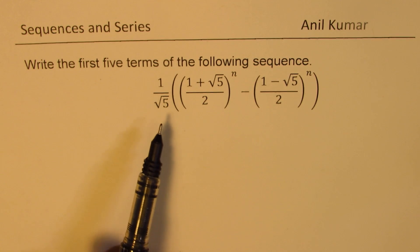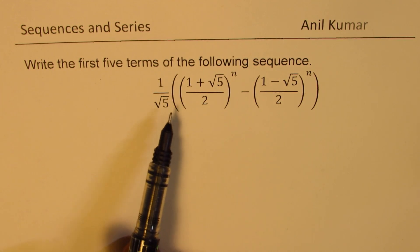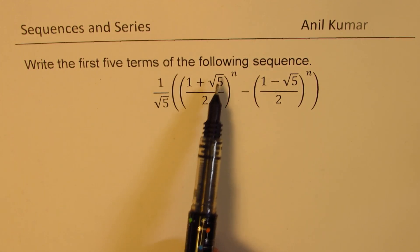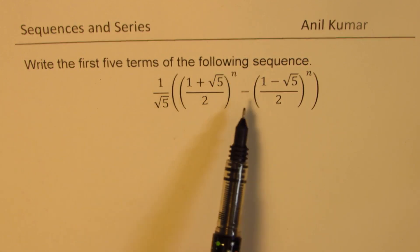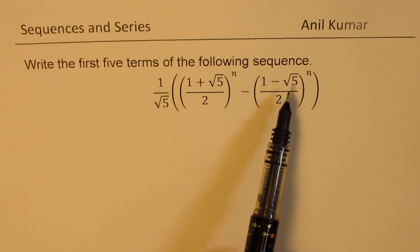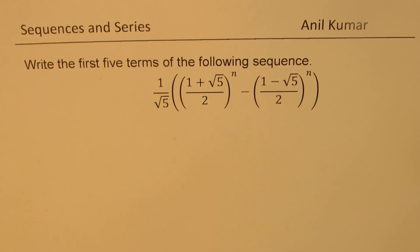The sequence is: 1 over square root 5, times the quantity (1 plus square root 5) over 2, to the power of n, minus (1 minus square root 5) over 2, to the power of n. You can pause the video, write down the series, and then watch the rest.